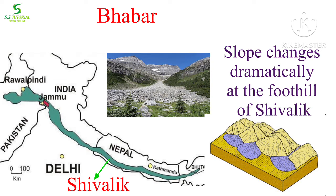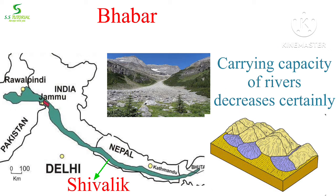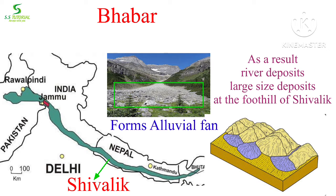At the foothills of the Siwalik, the slope of the terrain changes dramatically, and as a result the carrying capacity of the rivers decreases significantly. Mostly large-sized sediments like gravel and pebbles are deposited by the rivers at the foothills of the Siwalik, forming alluvial fans.